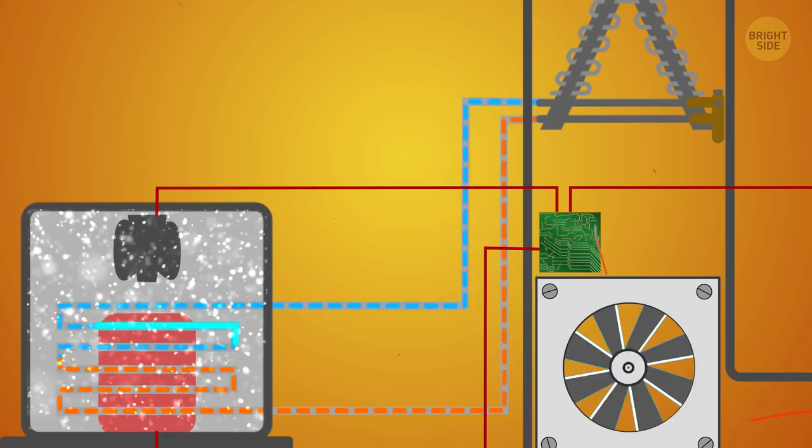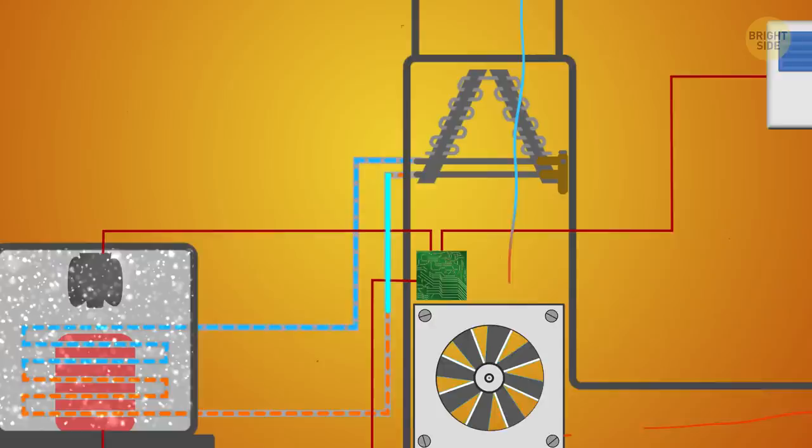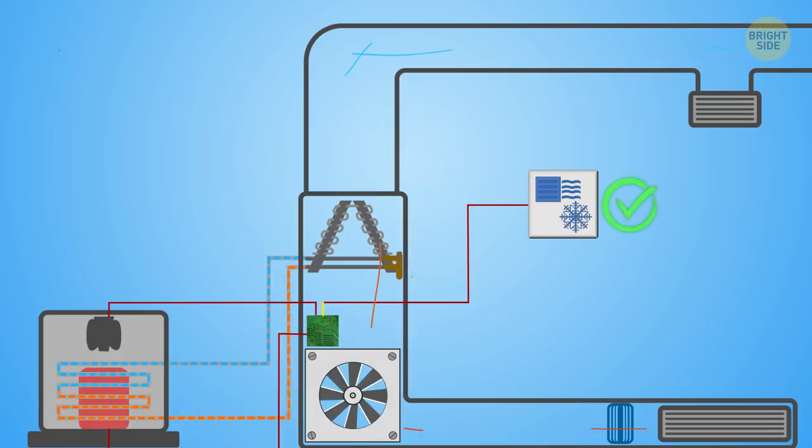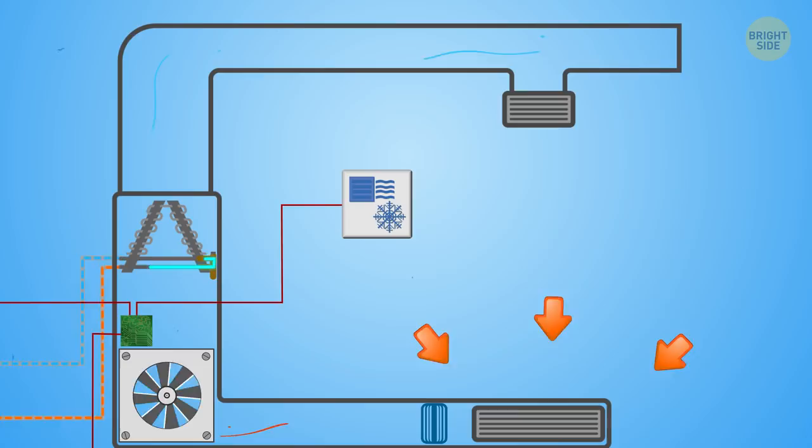All of this is going on at the same time and in a never-ending cycle. Well, until the thermostat decides the temperature is now okay and shuts it down before it gets hot inside again. Then it starts over. The heat goes out, and the cold air comes in. It spreads across the house through the supply vents.